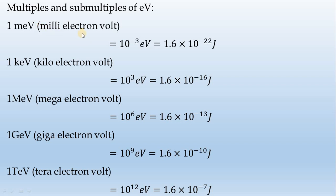There are different notations: milli electron volt is 10 to the power minus 3, kilo electron volt is 10 to the power plus 3, mega electron volt is 10 to the power 6, giga electron volt is 10 to the power 9, and tera electron volt is 10 to the power 12 electron volts.